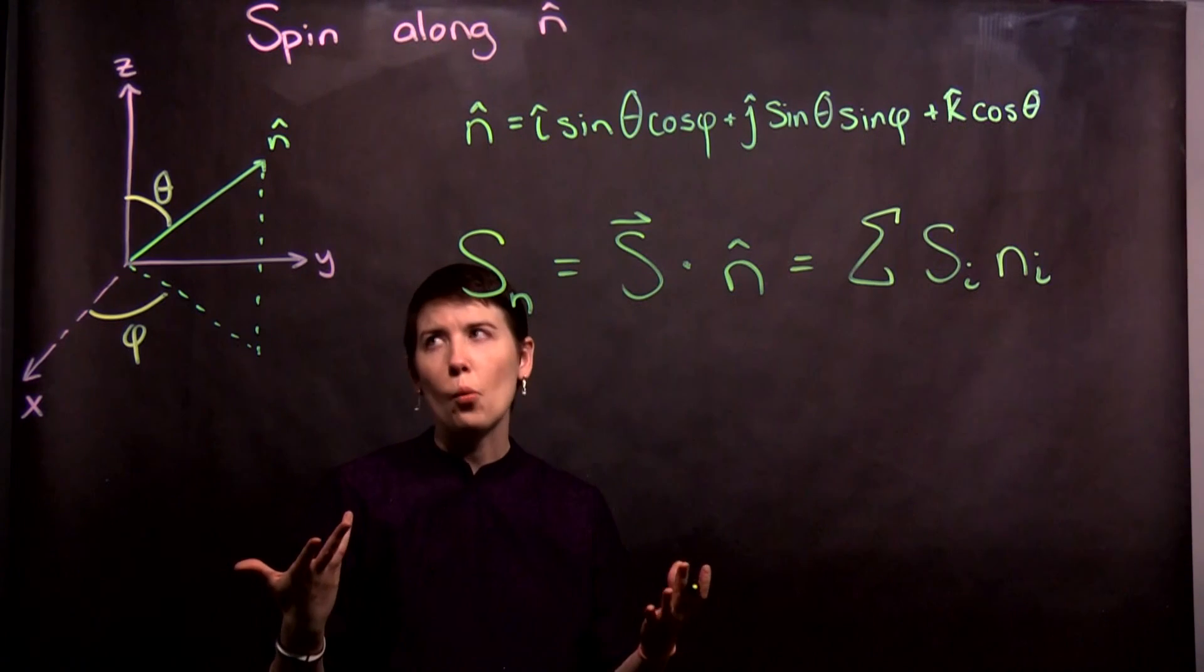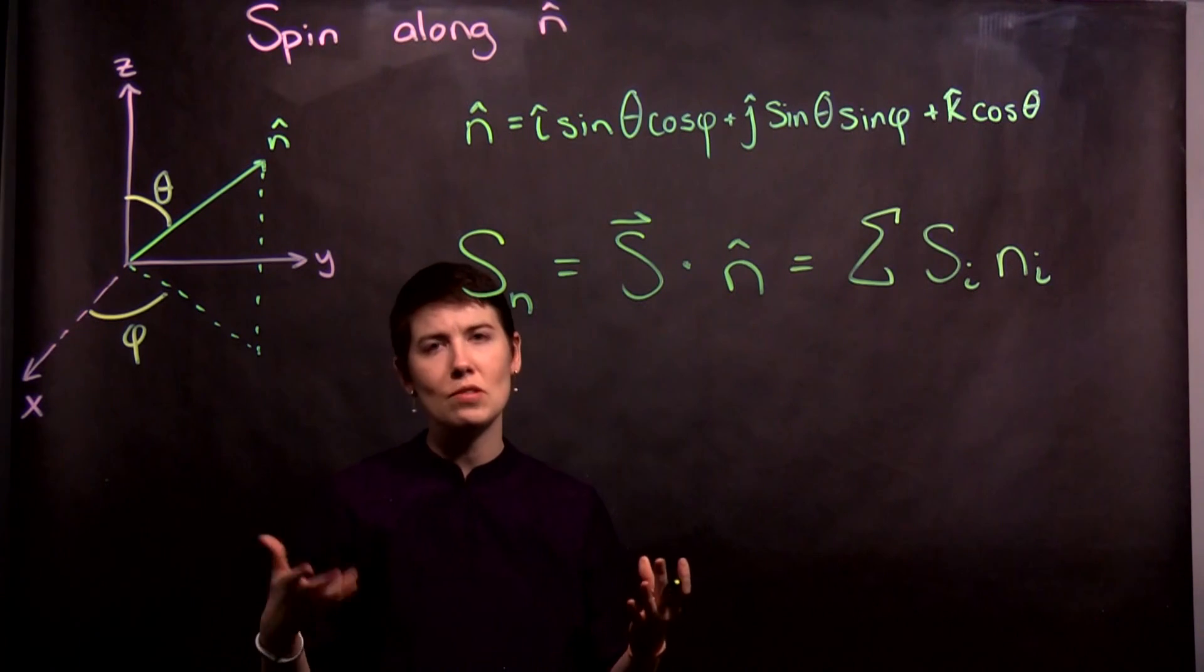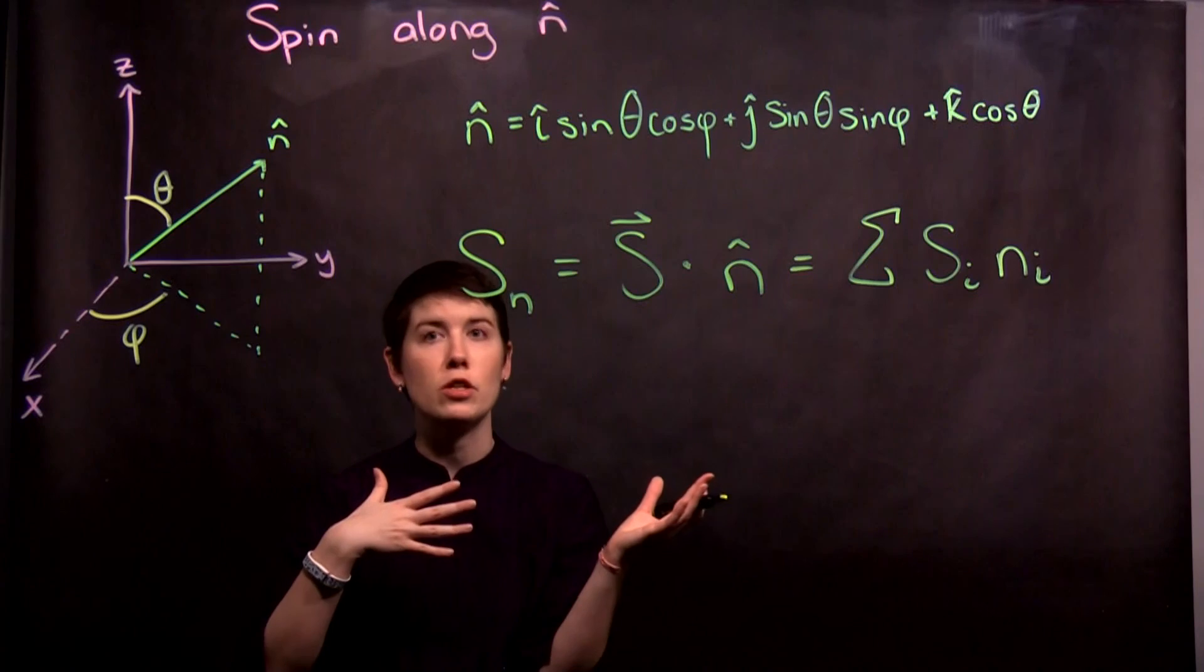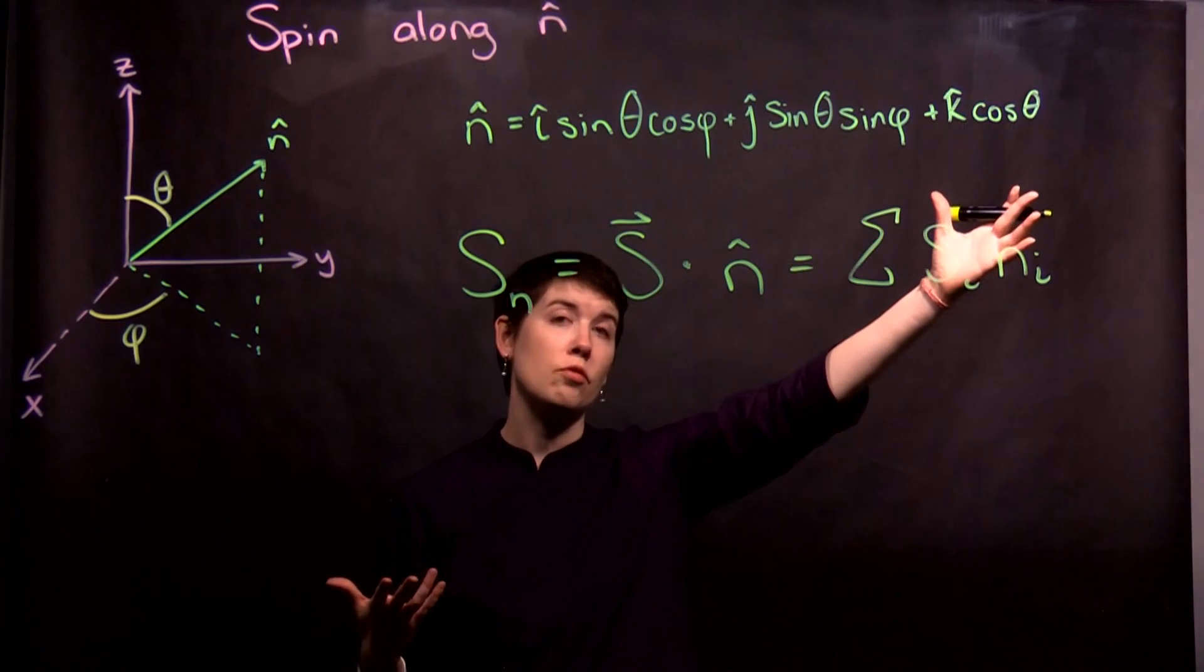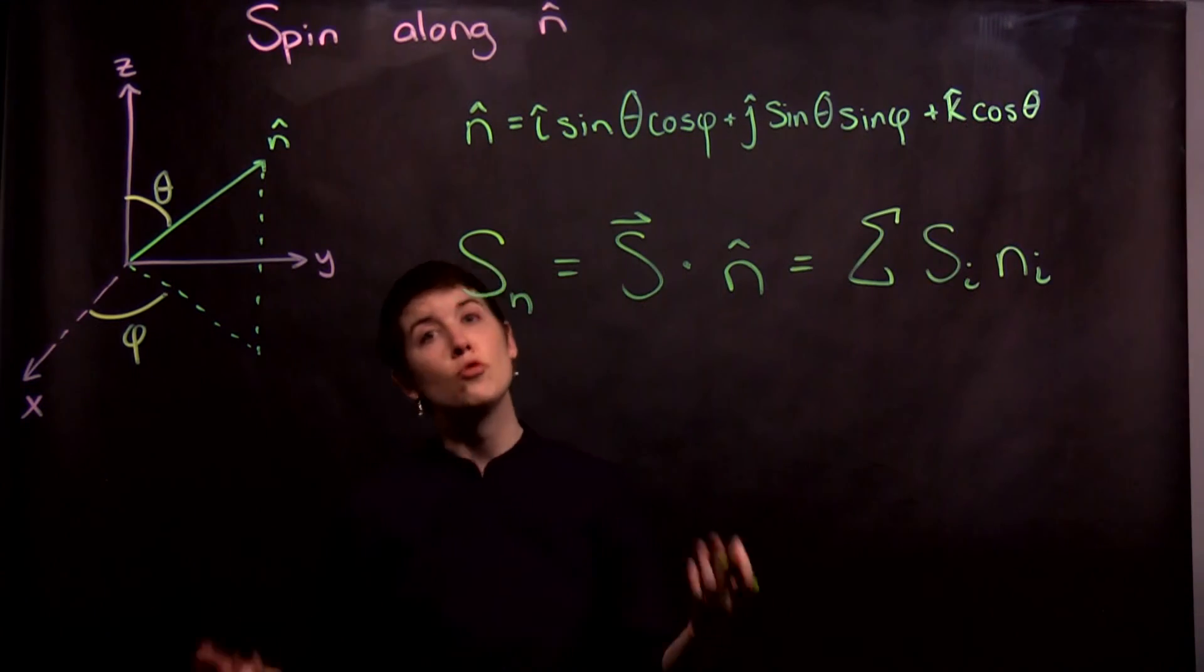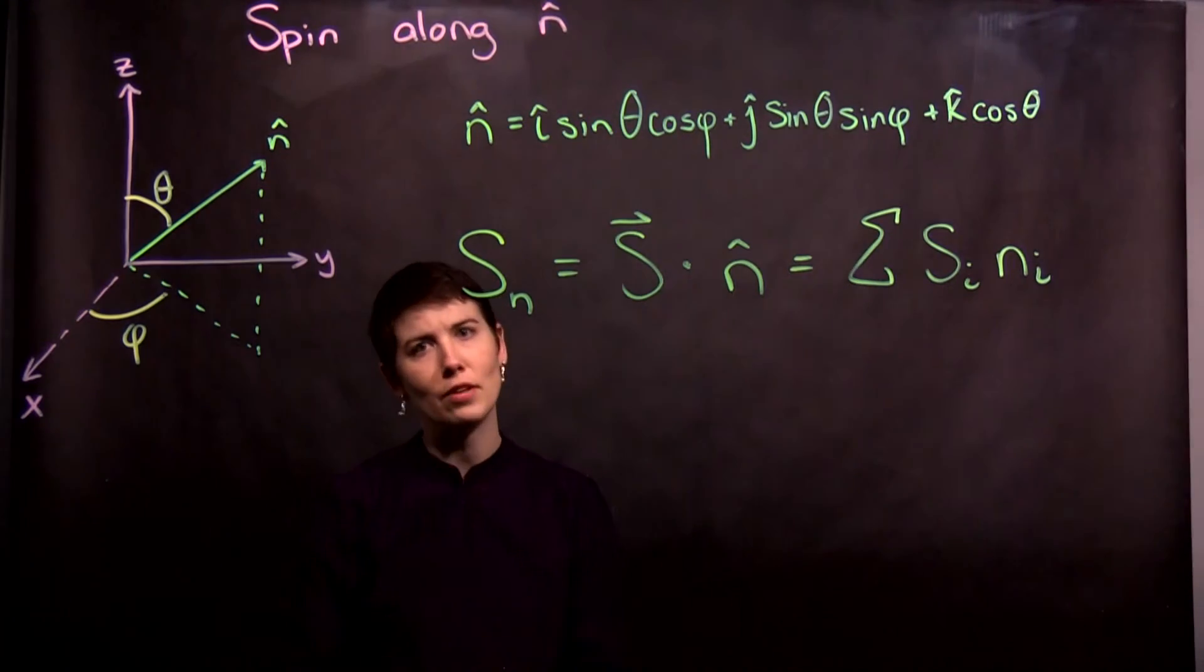And why would you do this? Well, if you actually want to find what's the spin if we now tilt our magnet thirty degrees or something, you would actually have concrete values in here, for theta and phi. We can derive it in general, and then later plug in specific values. Alright. I'll see you next time.